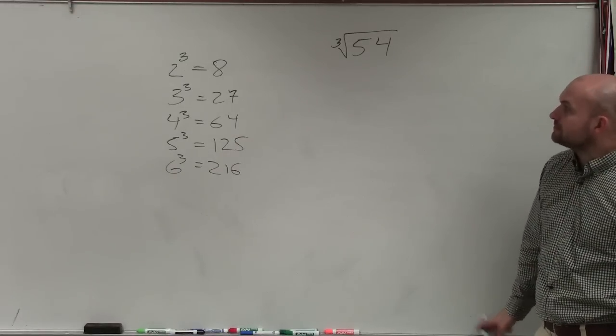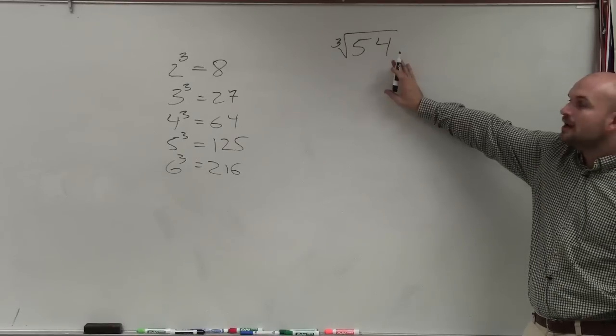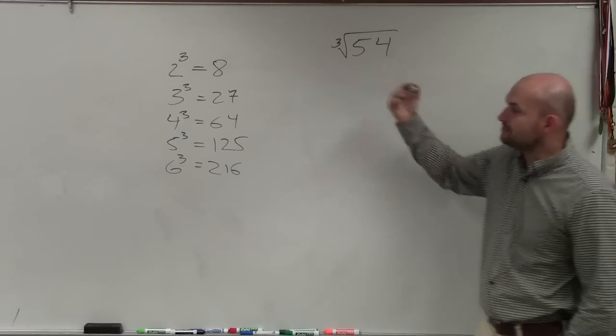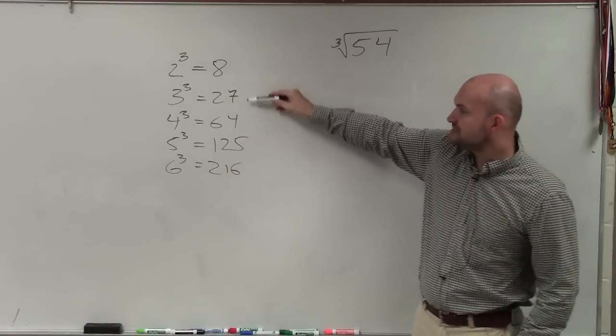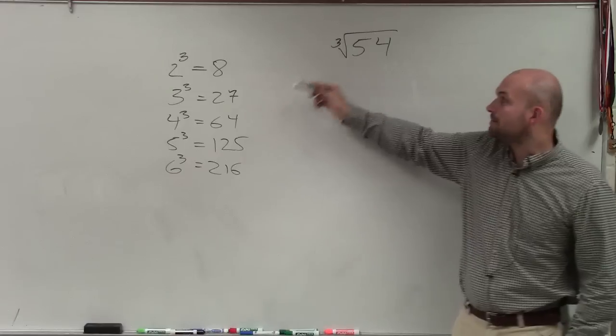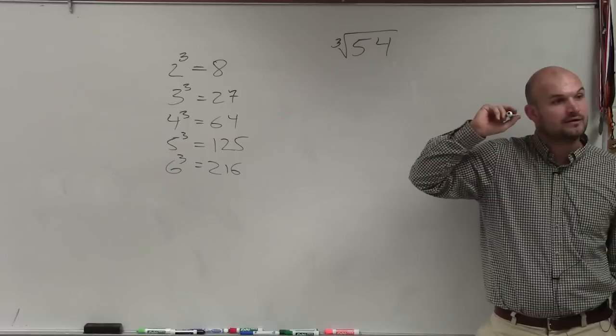So when I'm looking at this, if I want to simplify cube root, yes, we could prime factor 54. There's not a problem with doing that. However, I always think it's simpler or easier to be able to determine which of these numbers divides into 54. Yeah, 27. And it goes in there twice.